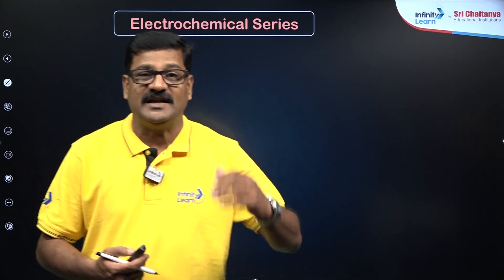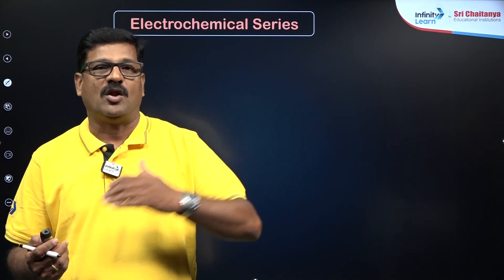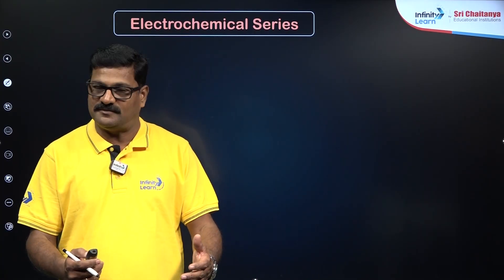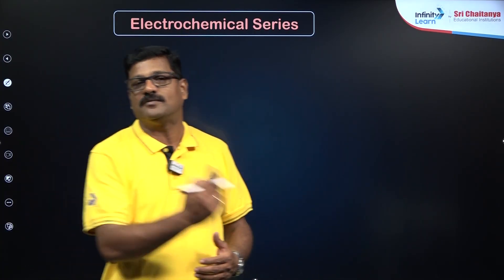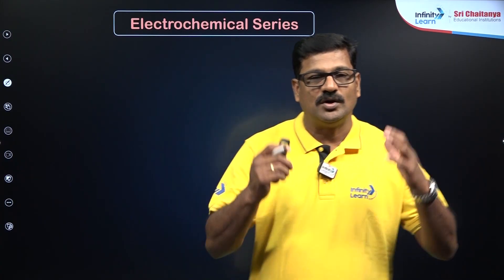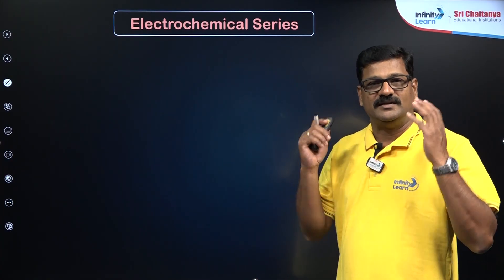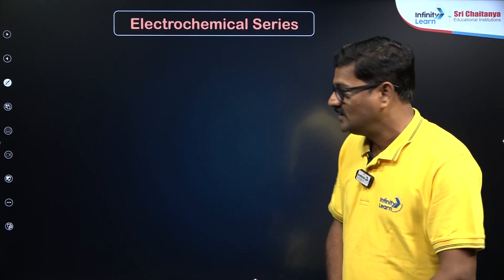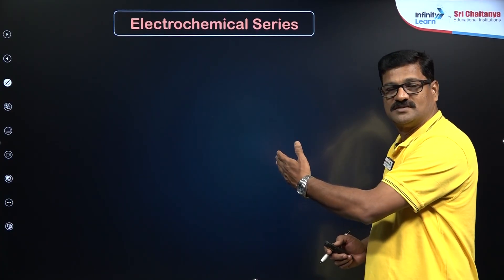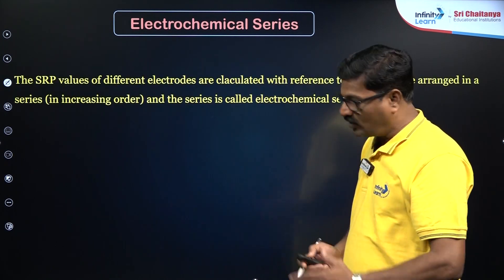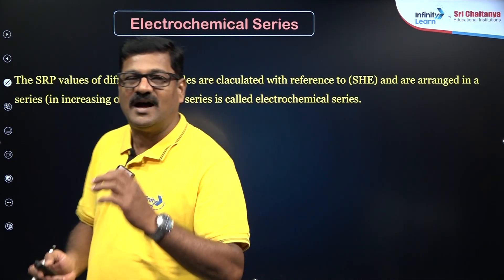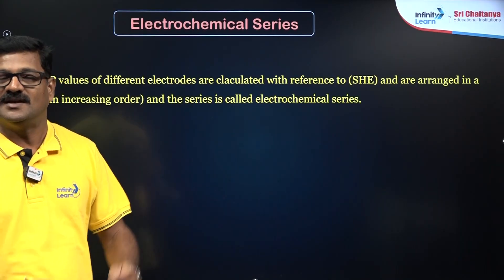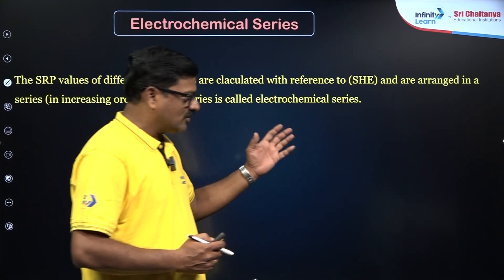Standard oxidation potential is meant for the loss of electron process, and standard reduction potential is meant for the gain of electron process. Every metal and every electrochemical cell will have a standard electrode potential, and single electrode potentials are given in increasing or decreasing order. That sequence of the electrode potential values is called the Electrochemical Series.